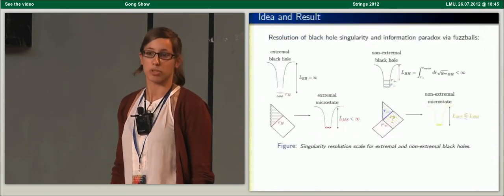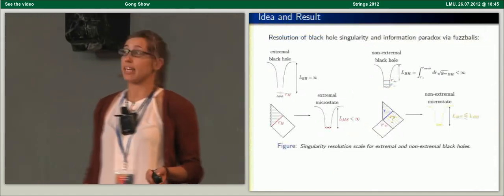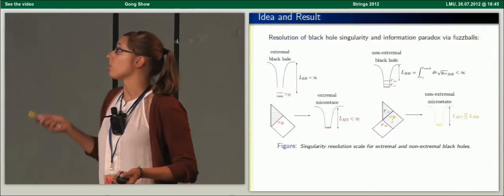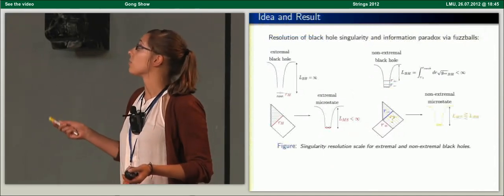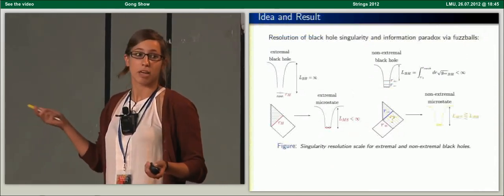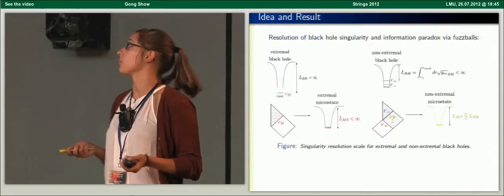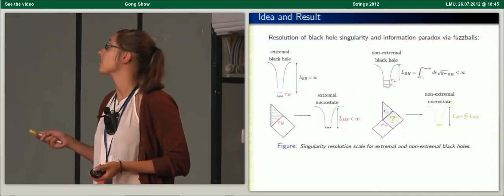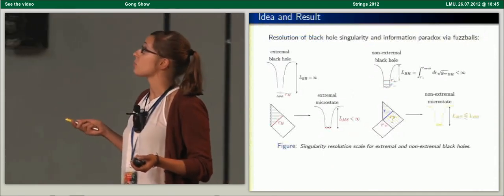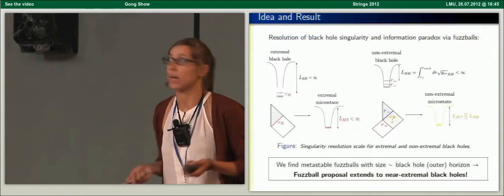The black hole should be viewed as an averaging over these horizonless geometries, which smoothly cap off at some finite distance in the throat with no space-time behind the would-be horizon. The important question is what happens for non-extremal black holes. The Fuzzball proposal says that the singularity should be resolved at the scale of the outer horizon. To test this proposal, we should construct a representative amount of non-extremal microstates. As an upshot, we find metastable fuzzball configurations of the order of the black hole outer horizon, giving good confidence that the fuzzball proposal extends to near-extremal black holes.